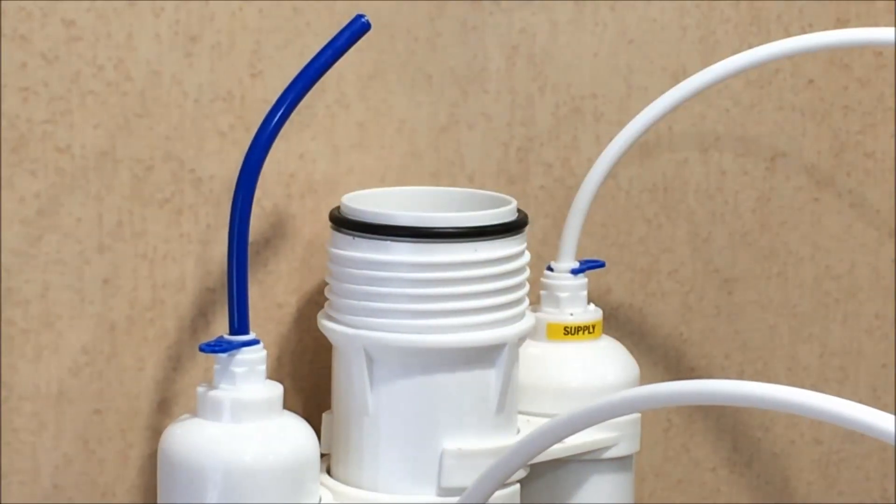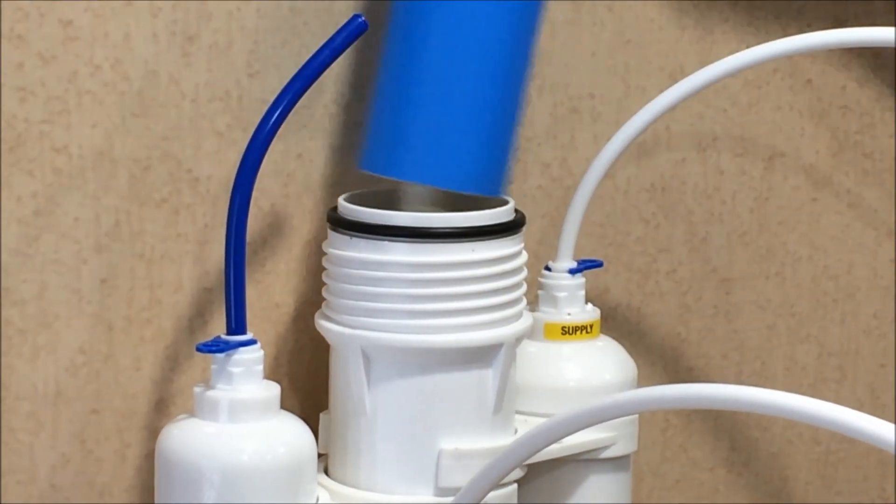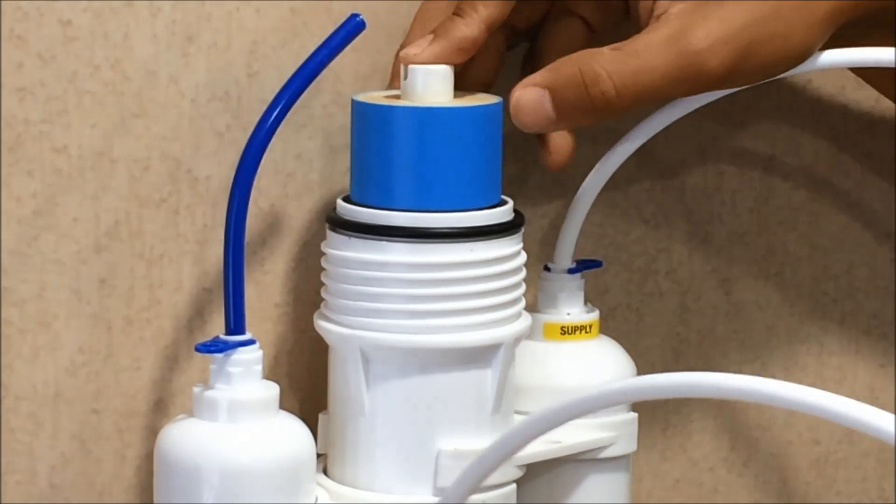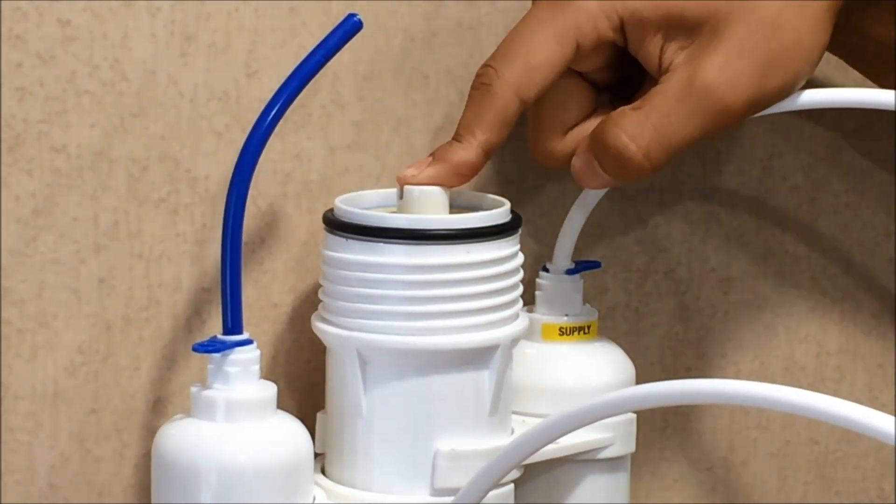Once you have the cap off, go ahead and install the membrane with the black gasket towards the top, and push that all the way down into the housing.